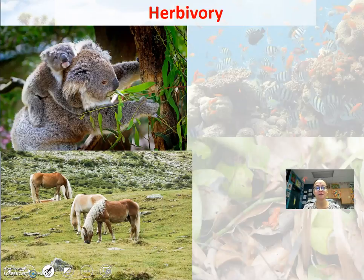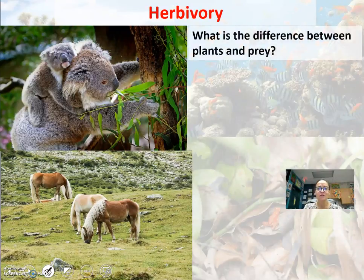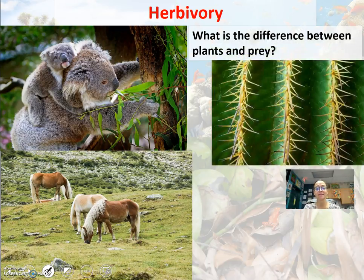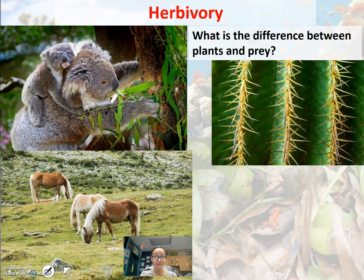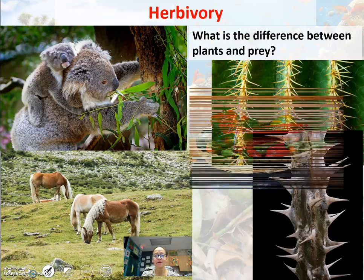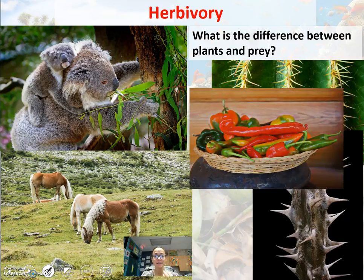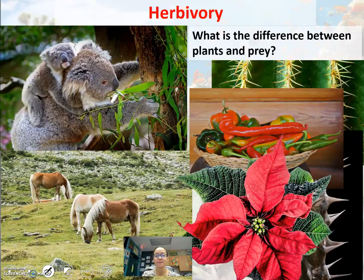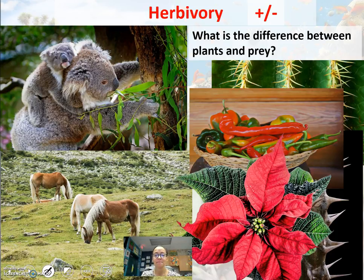Herbivory — many animals on Earth are herbivores, and plants have evolved defenses to prevent being eaten. The difference between plants and prey is that prey can escape with legs or fins, whereas plants are rooted in place. Some plant defenses include spikes — like cacti that store water — hot peppers whose capsaicin deters herbivores, or being poisonous like poinsettias. With herbivory, it's a win for the herbivore and a loss for the plant, but plants have evolved some defenses against too many herbivores.